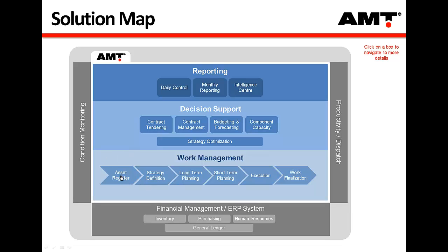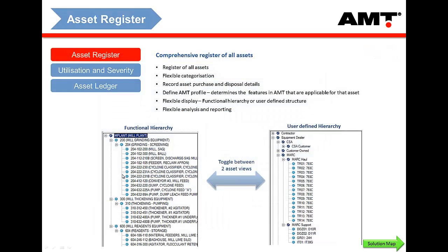First of all, the asset register. AMT has a register of all your assets. In this context, it's not a financial asset register — it's not doing the capitalization of assets and depreciation of assets. Rather, it's an operational register of all of your assets, allowing you to see the assets and the base information around each asset.